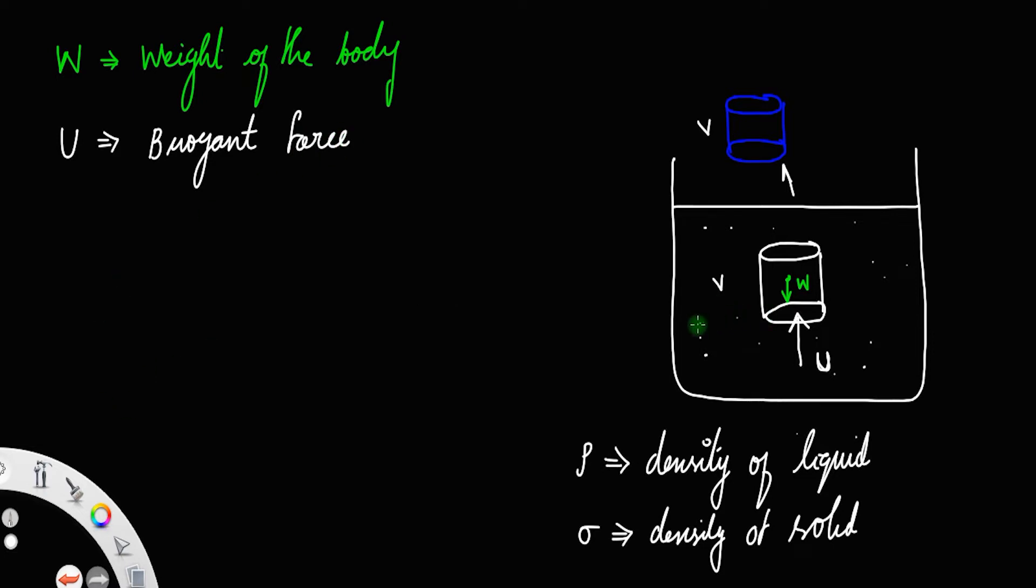Since the weight is in the downward direction for this body and upthrust is in the upward direction, the apparent weight W_ap is equal to the weight of the body minus upthrust. Since they are in opposite directions, one should be taken as positive and the other as negative. So the resultant will be W minus U.